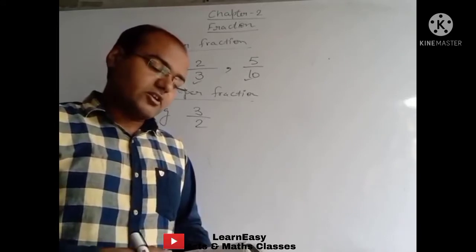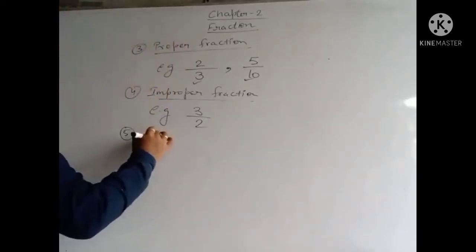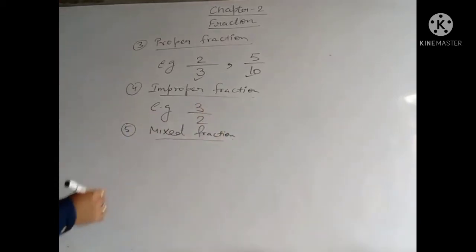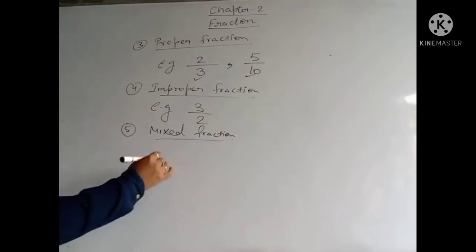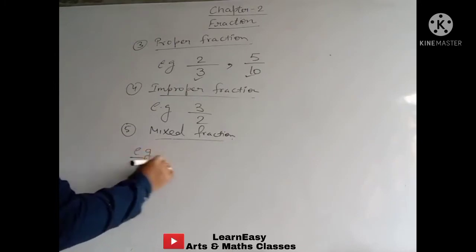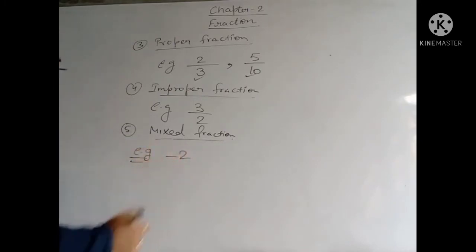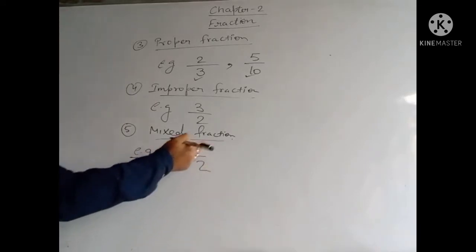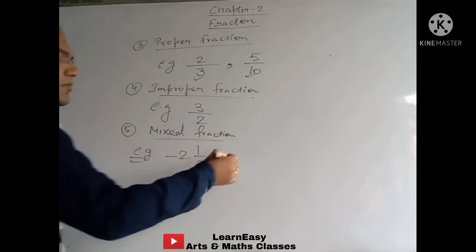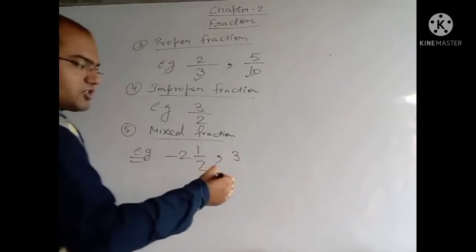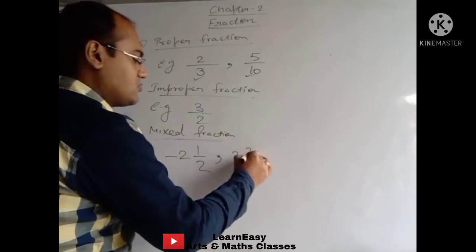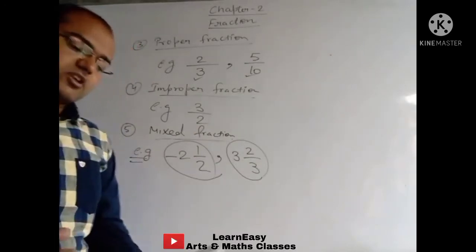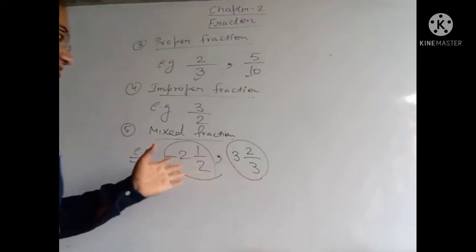The fifth type is Mixed Fraction. Mixed Fractions are those in which an integer is combined together with a proper fraction. The integer can be positive or negative. For example, negative 2 (integer) together with a proper fraction where numerator is less than denominator. Another example: positive integer 3 together with the proper fraction 2 upon 3. Such examples are of Mixed Fractions.